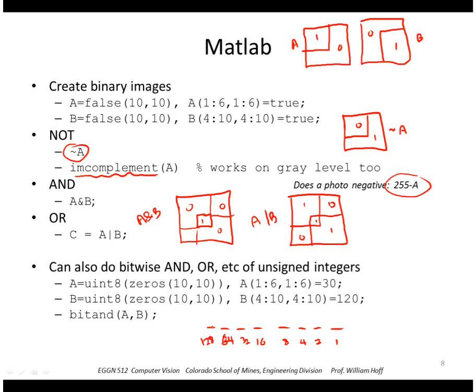So a 30 is 1, 1, 1, 1, 0, and zeros here. And let's say I put a 120 wherever I had the ones and Bs. A 120 in binary would be a 1 here, 1, 1, 1, 1, let's see, 64, 32, 0 here.